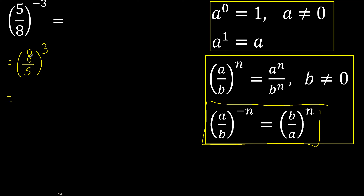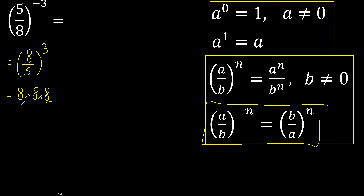So 3 is the exponent of everything. 8 times 3: 1, 2, 3. And 5 times 3: 1, 2, 3. Then 8 times 8 is 64, and 64 times 8 is 512.